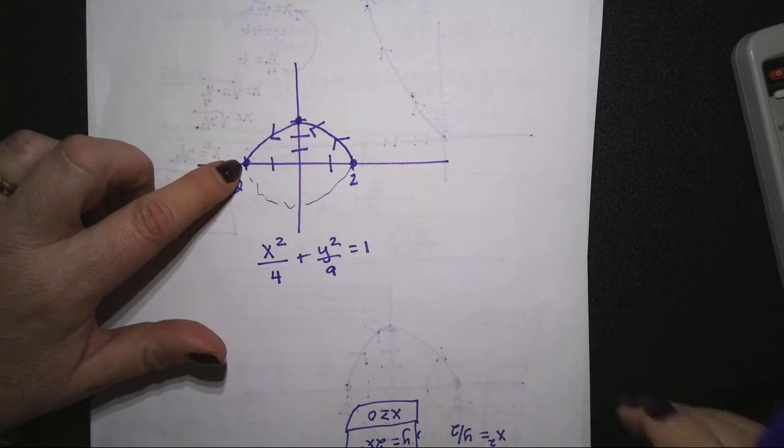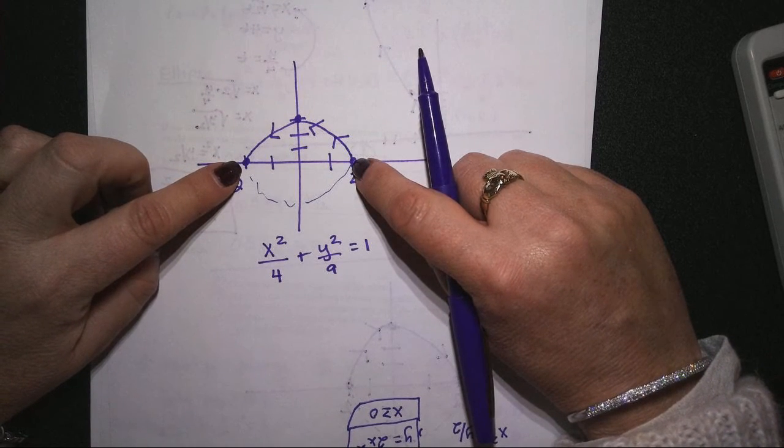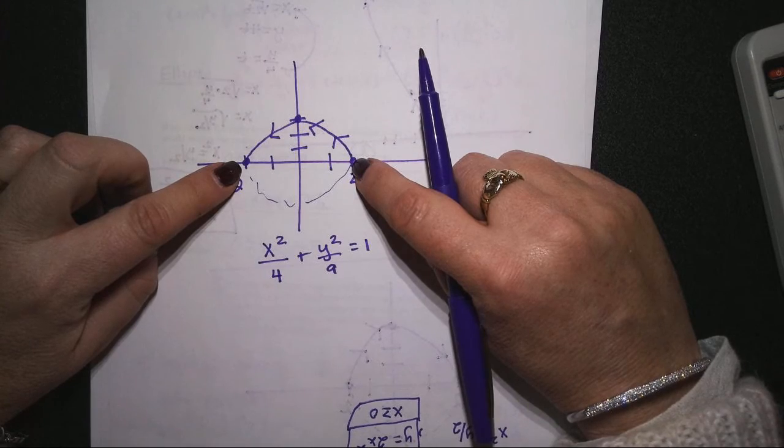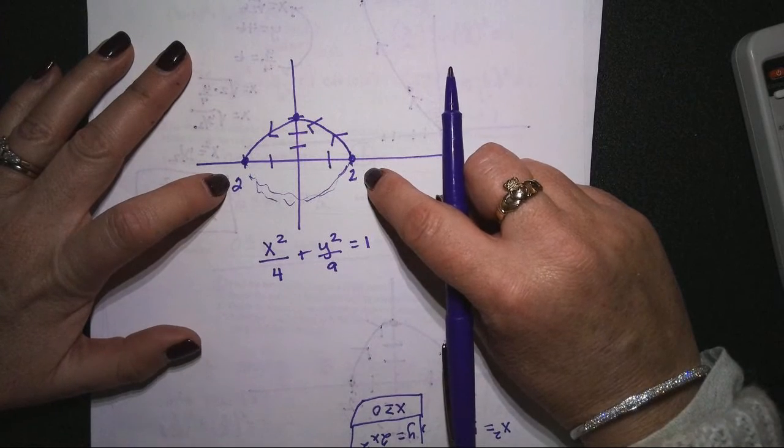Because if I restrict the domain from negative 2 to 2, that's not going to tell me that I want the top half of the circle, is it? Because if I graph this full entire ellipse, the domain's also going to be negative 2 to 2.